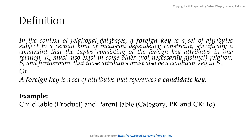Let's see the definition of the foreign key. In the context of relational databases, a foreign key is a set of attributes subject to a certain kind of inclusion dependency constraint. Specifically, a constraint that the tuples consisting of the foreign key attributes in one relation R must also exist in some other relation, not necessarily distinct, relation S. Furthermore, those attributes must also be a candidate key in S. In simple words, a foreign key is a set of attributes that references a candidate key. The table containing the foreign key is called the child table, and the table containing the candidate key is called the referenced or parent table.